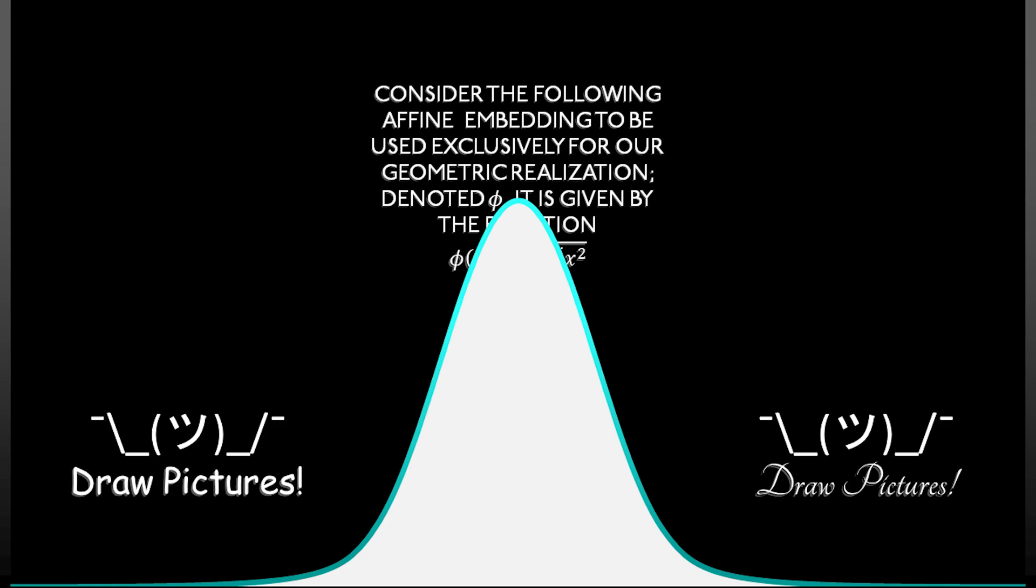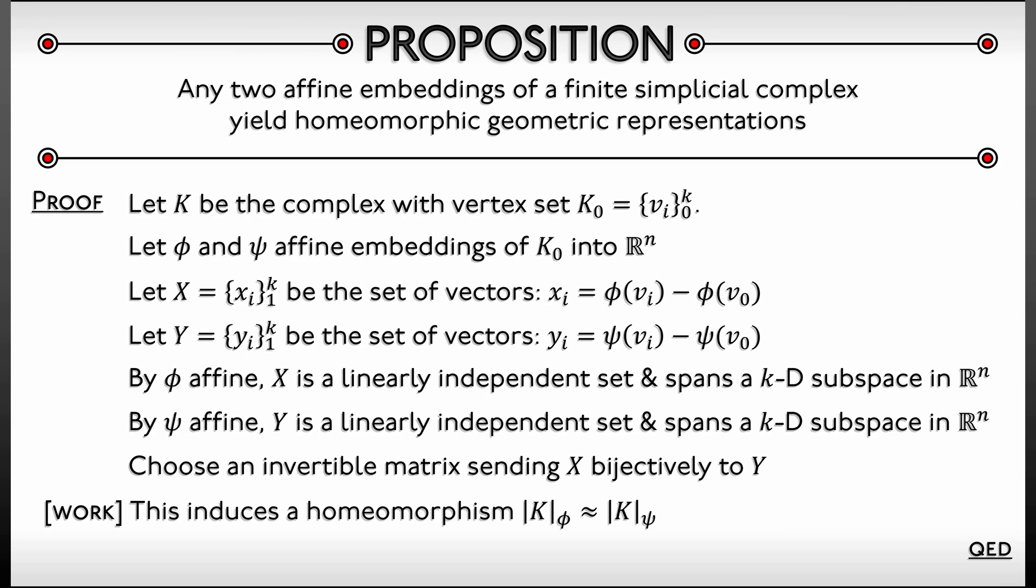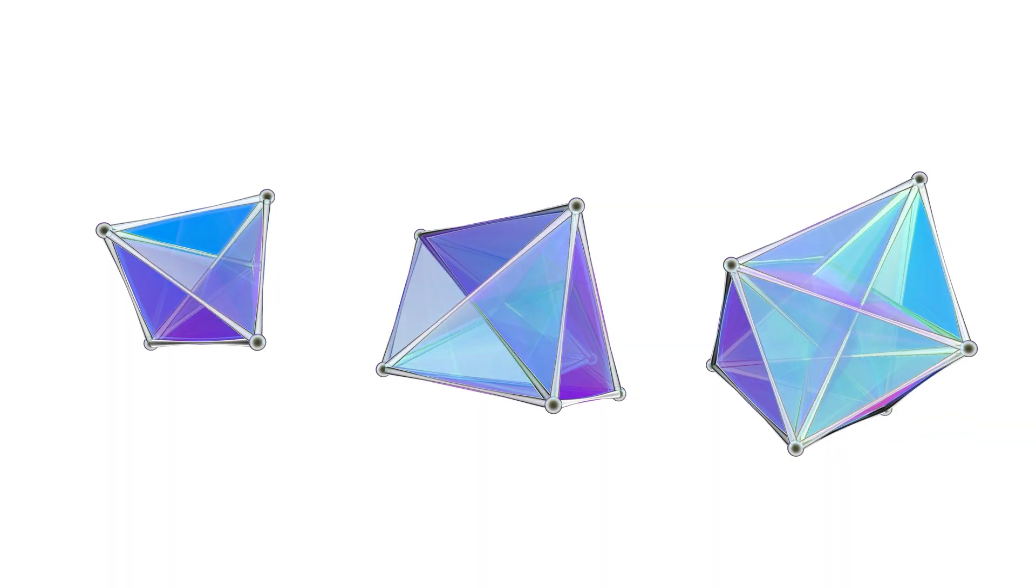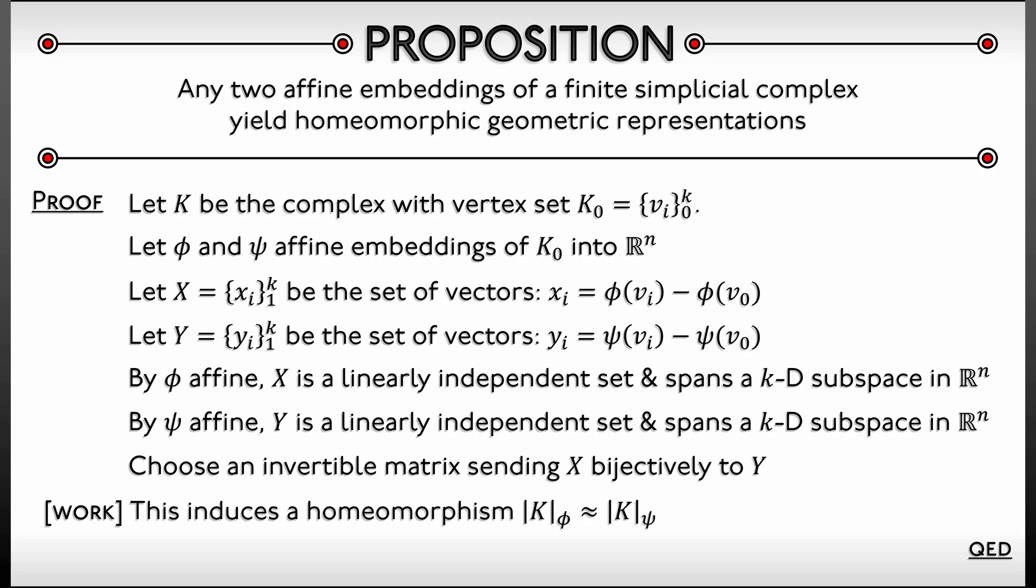But when we want to really prove theorems, when we want to do mathematics with these things, then we're going to work with affine embeddings and use the result that we have just proved to guarantee that everything is nice and well behaved. So we can do combinatorics when we want, we can do geometry when we want, we can draw pictures when we want. When we need to prove theorems, we'll use the previous proposition.